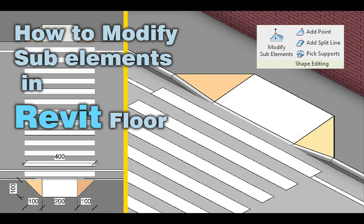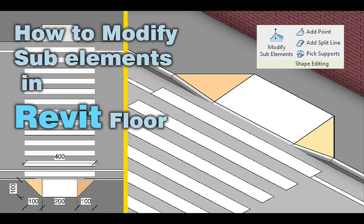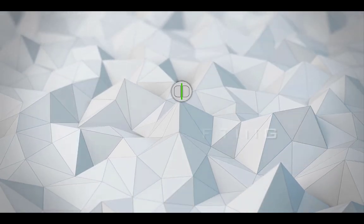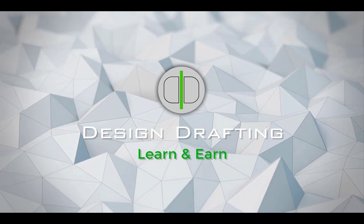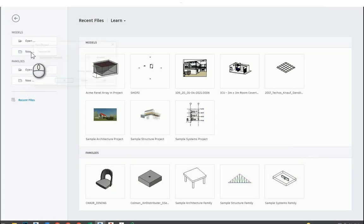Hey guys, I hope everybody is fine. Today I will show you how to modify a sub-element in the Revit floor, plus I will show you how to create the curb stone for the footpath and how to create the zebra cross on the road. So let's jump into the tutorial.